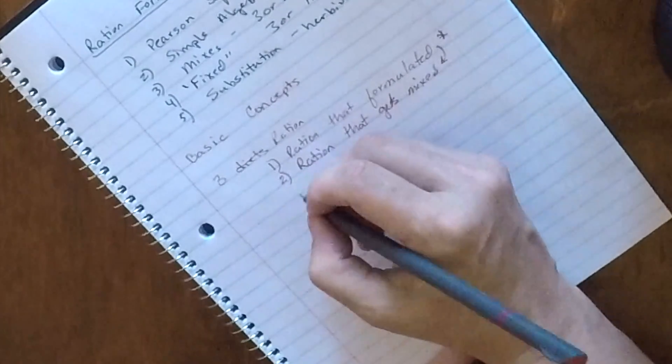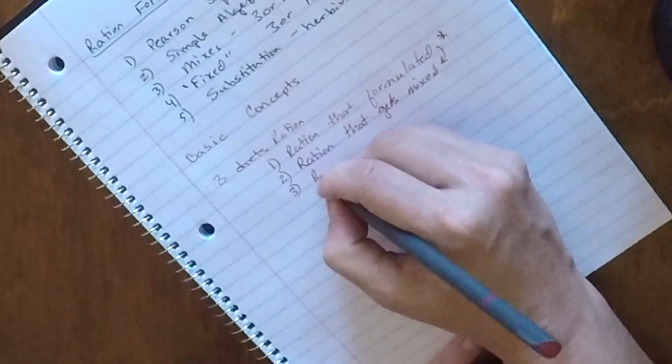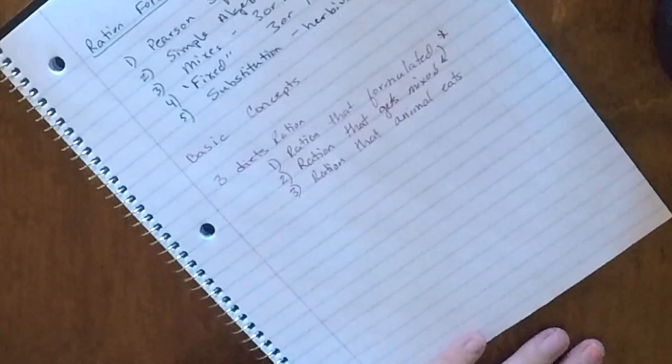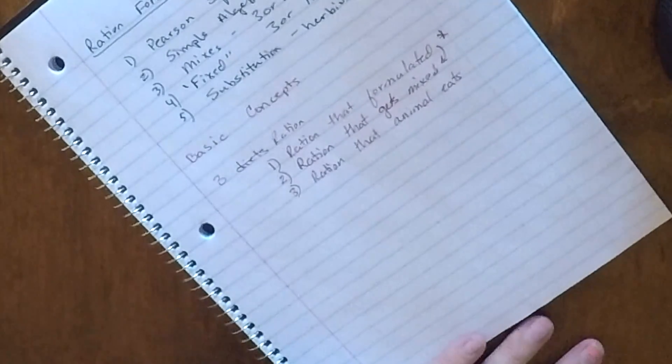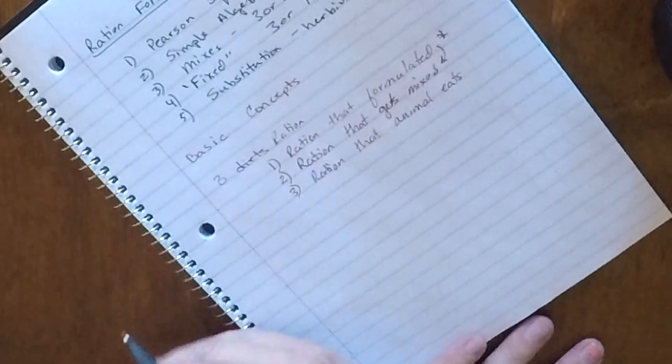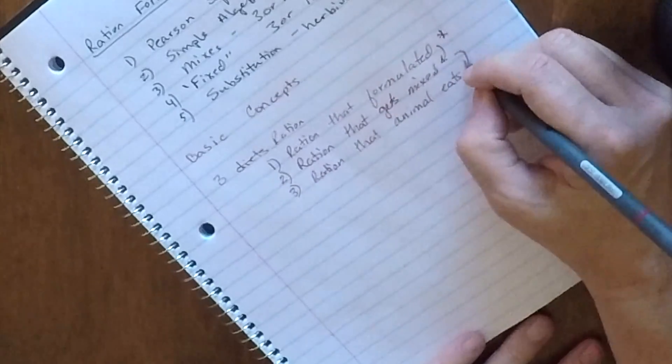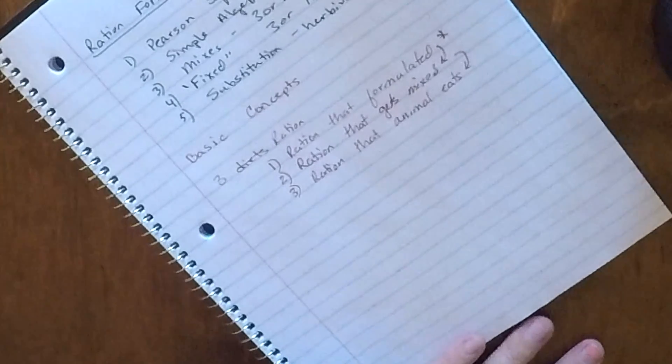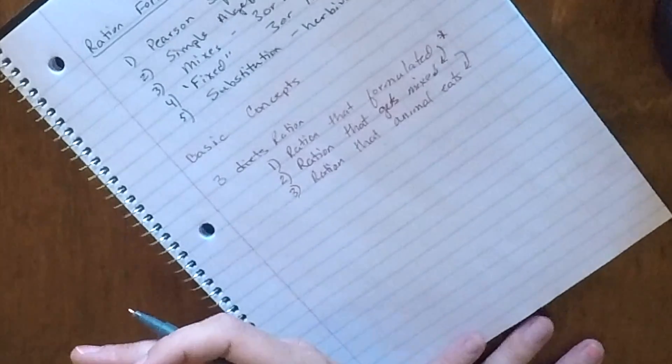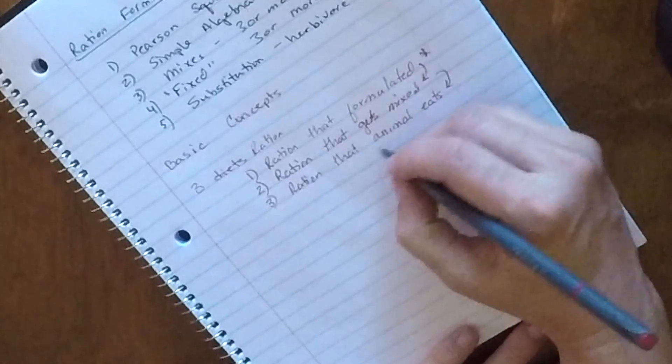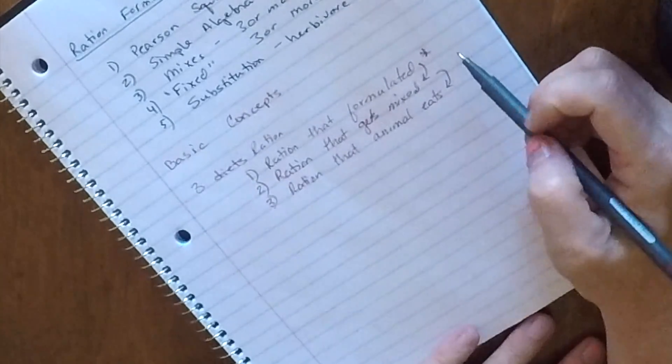But then the last ration that we're going to have to conceptually deal with is the actual ration that the animal eats. Now, I saw a couple of you had an interest in goats and stuff like that. If you've ever been around an animal that sorts its food into different segments, then you realize that the animal may not exactly eat what you put in front of it. And so as a result, we have this beautifully formulated ration that got mixed pretty close to how we want it, and then the animal goes and sorts stuff out. So that's going to change what nutrients the animal is actually receiving because there's going to be error.